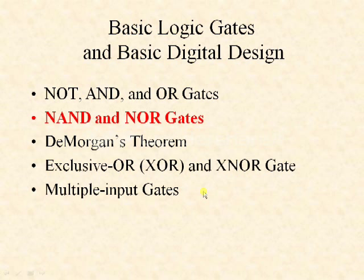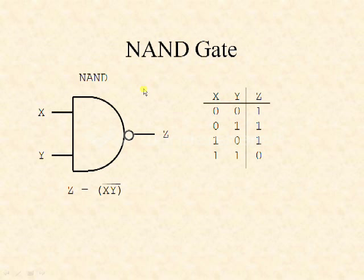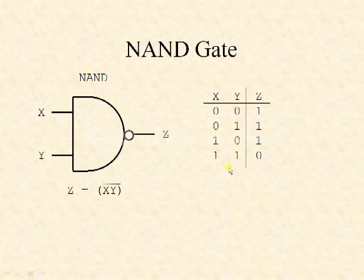Now we will discuss NAND and NOR gates. The NAND gate is a combination of an AND gate and a NOT gate — the bubble in the symbol represents the NOT gate. Here is a two-input NAND gate where x and y are the two inputs and z is the output. The output expression is z equals xy whole complement. The truth table shows it performs the inverse operation of the AND gate: if both inputs are 1, the output is 0; if any input or all inputs are 0, the output is 1.